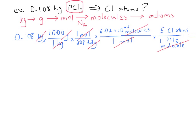Now do the math: take 0.108, multiply by 1000, divide by 208.22, multiply by 6.02 times 10 to the 23rd, then multiply by 5. Using 3 significant figures — because 0.108 is 3 sig figs — the answer is 1.56 times 10 to the 24th Cl atoms.